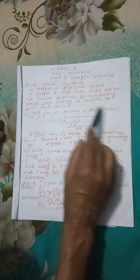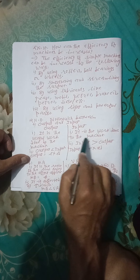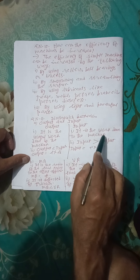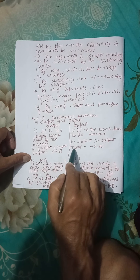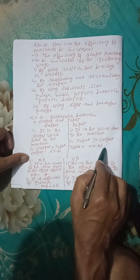Question number 11: Distinguish between the following. Number A: Output and Input. Output: It is the useful work done by the machine. Output is always less than input, and output equals Load × Load distance. Input: It is the work done to the machine, or it is the energy supplied to the machine. Input is more than output, and input equals Effort × Effort distance.